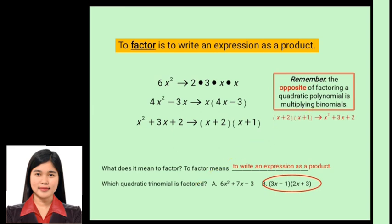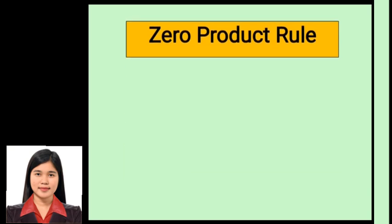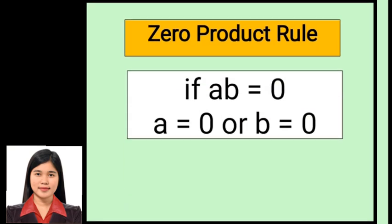So we have (x plus 2)(x plus 1) is equal to x² plus 3x plus 2. When finding roots of a quadratic equation by factoring, we use the zero product rule, which states that if a·b equals 0, then either a equals 0 or b equals 0.